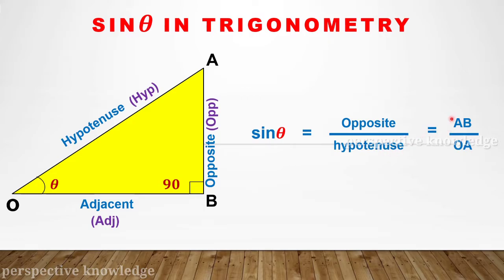In this triangle, AB is the opposite side, OA is the hypotenuse. So sin theta is equal to AB divided by OA.